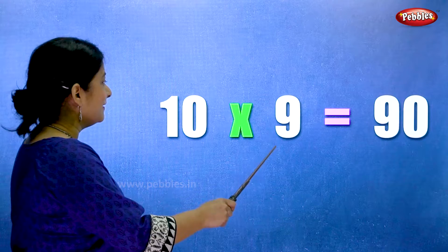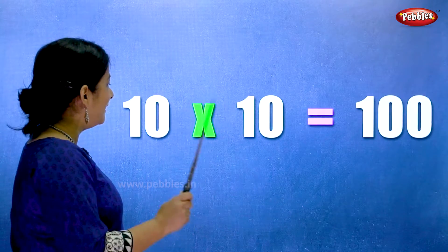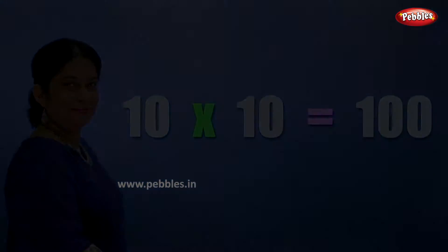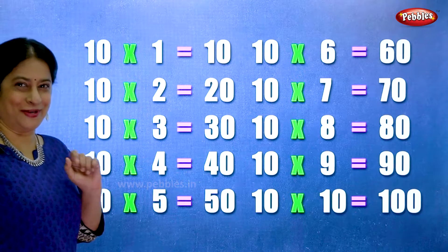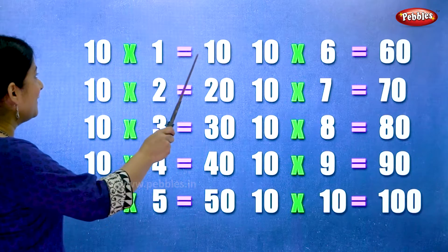Ten nines are ninety. Ten tens are one hundred. Let's learn the table of ten one more time. Ten ones are ten.